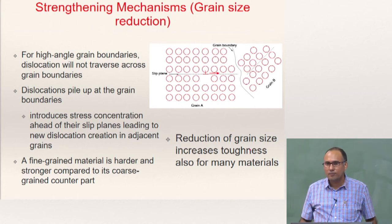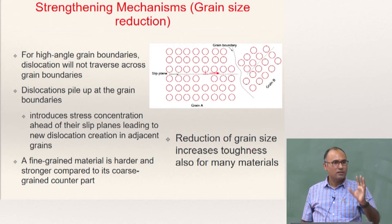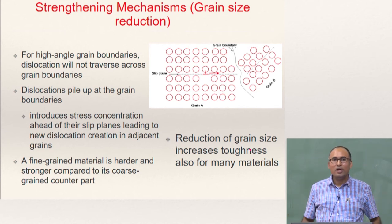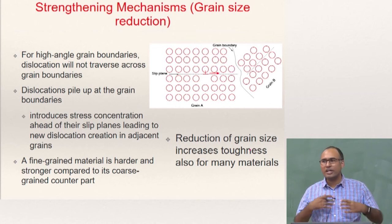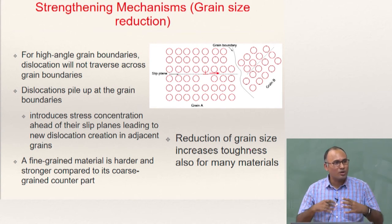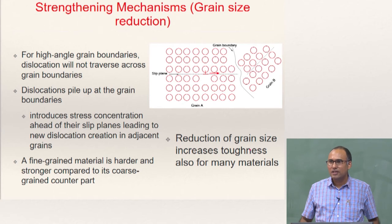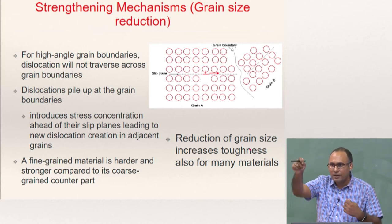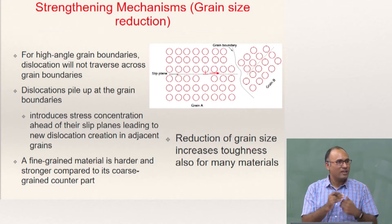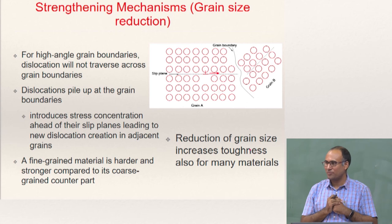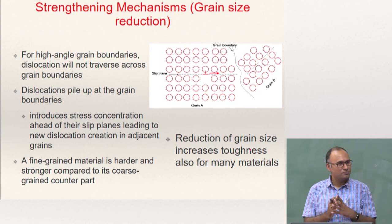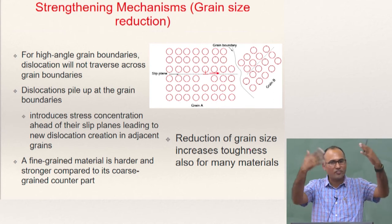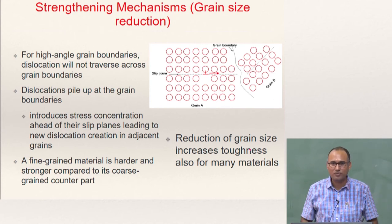Is it clear why grain boundaries increase the strength of the material? Now, if you have a crystalline material with more grain boundary area, there are more obstructions to dislocation motion. If you increase the grain boundary area, you increase the probability of dislocations getting impeded near the grain boundary. So one of the ways to increase strength is by increasing the grain boundary area. How can you increase the grain boundary area? Take a material and reduce the grain size. If you reduce the grain size, you can put in more grains and as a result you will have more grain boundary area.